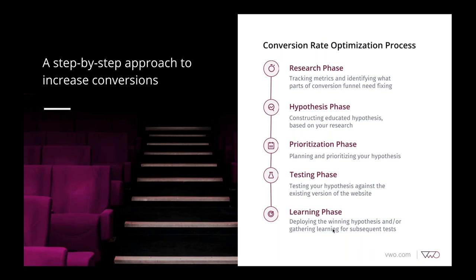In the next phase, once we have a backlog of ideas, we prioritize them based on different criteria such as confidence, importance, and ease of implementation. Once we have a prioritized list, we test them against the existing version of the website. Finally, in the learning phase, we deploy winners and gain learnings from subsequent tests. In this webinar, we will deep dive into the research phase, understand various research methods, practical use cases, and best ways to get maximum outputs with minimum inputs.